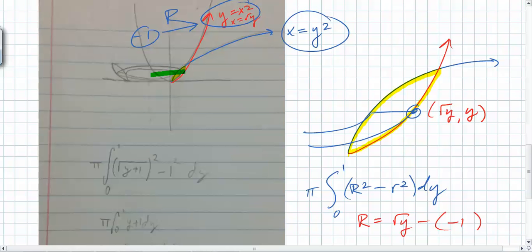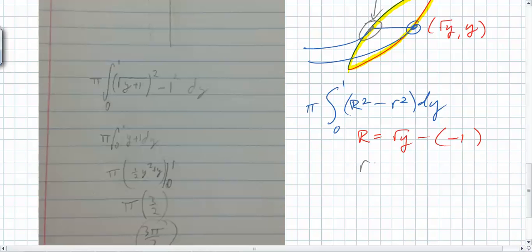But what about little r? Little r goes to which point? That point right there. What's that point right there? We need it in terms of y. So instead of x, y, what's it going to be? Y squared. Exactly. So what's little r going to be? Y squared minus negative 1. The axis is still negative 1. It didn't change. So we plug this all in. We end up with pi times from 0 to 1 of the square root of y plus 1 squared minus y squared plus 1 squared, dy.